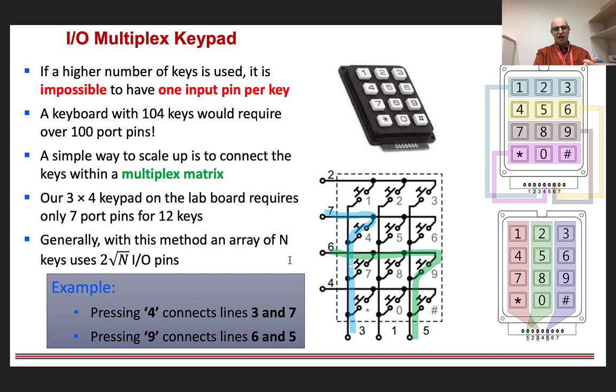And in the diagram that has been put down here, we can see that one button, the 4, has been pressed. And if button 4 presses, it shorts together the row 7 and the column 3.